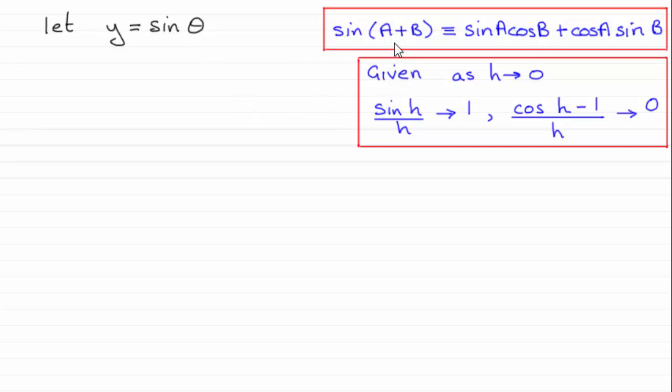Now what I'm going to be assuming throughout this video though is that you're familiar with this identity, the sine of a plus b, and also this result about limits where h is an angle that tends to zero. So let's start then.